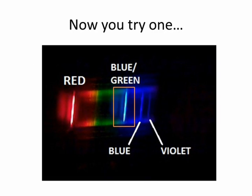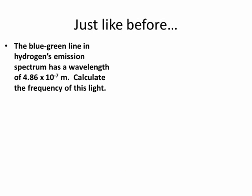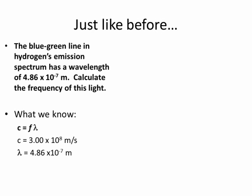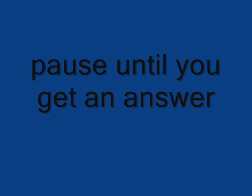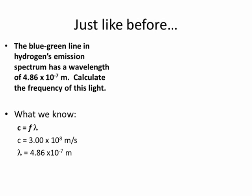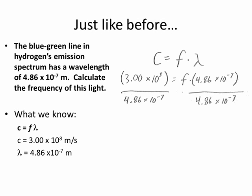Now try one on your own, this time using the blue-green line from the spectrum. Those photons have a wavelength of 4.86 times 10 to the negative 7th. Calculate the frequency of this light just like before — there's the equation, the value of C, and the value of the wavelength. Pause the video, do your calculation, and then press play and check your work. If you did it right, you would have gotten a frequency of 6.17 times 10 to the 14th hertz.